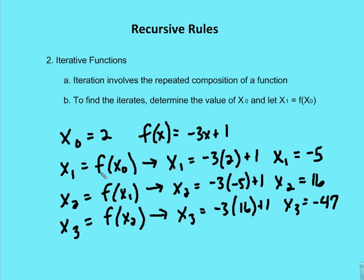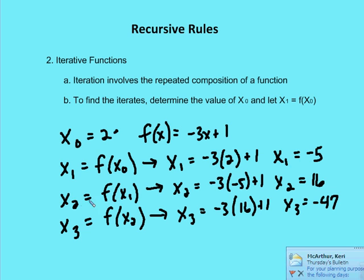For example, if I want to find x sub 1, I ask: what is the function of x sub 0? I place the value of x sub 0 into the function. So x sub 1 becomes negative 3 times x sub 0 plus 1. Negative 3 times 2 is negative 6, plus 1 is negative 5. Now I take that value of x sub 1 and place it in the function to find x sub 2. x sub 2 is the function of x sub 1, which is negative 5. So I have negative 3 times negative 5, which is 15, plus 1 — x sub 2 is 16.